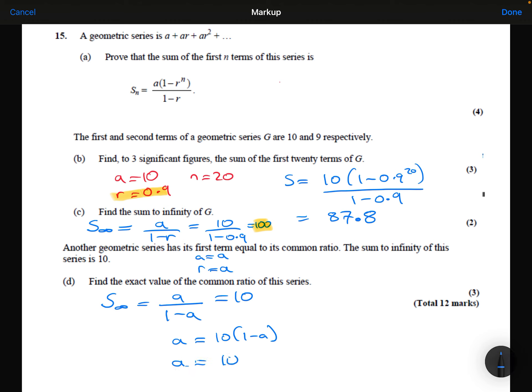Expand out the brackets. Add the 10A to both sides. And divide both sides by 11. I find that A is 10 over 11. So that's my first term. But it is also the common ratio, because we know they are equal. So the common ratio is 10 over 11.